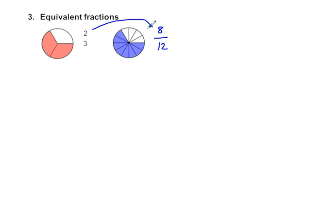What did I do to the two to get eight? Well, I multiplied by four. And if I take three, multiply it by four, I get twelve. So as long as I multiply both numerator and denominator by the same number, I will get an equivalent fraction.